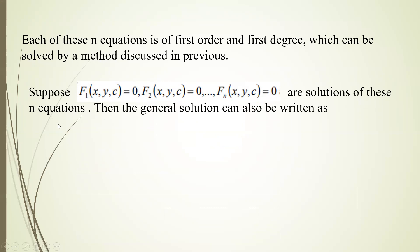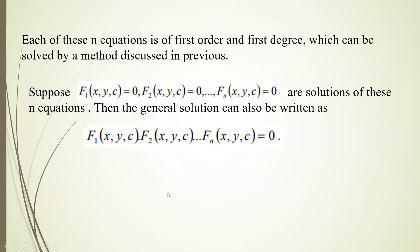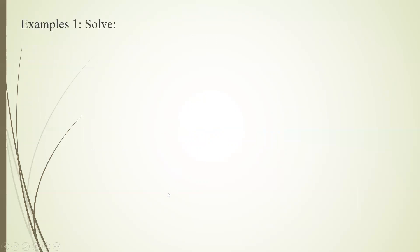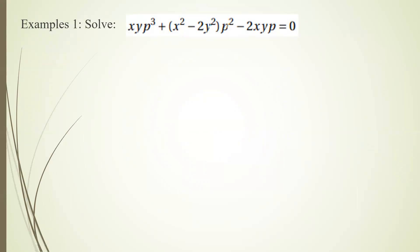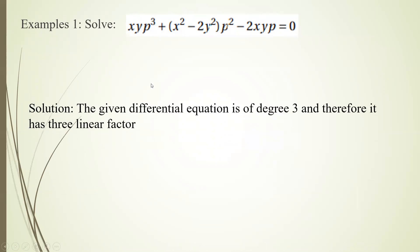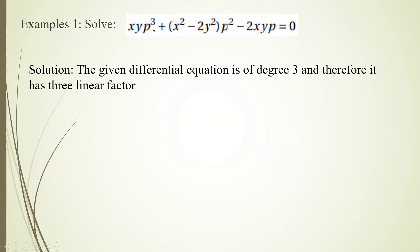If f1(x,y,c)=0, f2(x,y,c)=0, ..., fn(x,y,c)=0 are the solutions of the n equations, then the general solution is obtained by multiplying all solutions together, giving f1·f2·...·fn = 0. Now let's understand with an example. Example 1: Solve xy·p³ + (x²-2y²)·p² - 2xy·p = 0. This is a degree three equation in p.